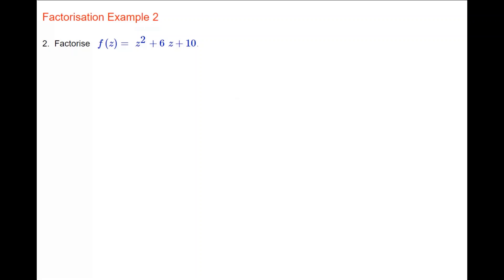In example 2, we'll factorise z squared plus 6z plus 10 by completing the square. The coefficient of z is 6; we halve it to get 3, and square it to get 9. We add 9 to z squared plus 6z and subtract 9 from the 10, leaving plus 1. So z squared plus 6z plus 9 factorises to z plus 3 all squared, giving z plus 3 all squared plus 1. We rewrite that as z plus 3 all squared minus i squared, a difference of two squares, giving z plus 3 minus i times z plus 3 plus i.